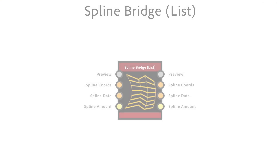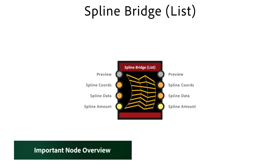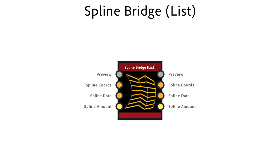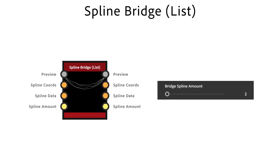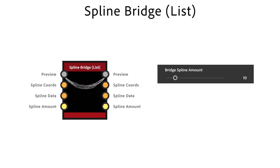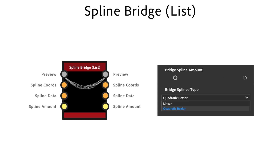For the spline bridge list node we need to place splines before. Then it generates new splines between the input splines. Bridge spline amount defines the number of generated splines. Bridge splines type lets you choose between straight linear or smooth quadratic Bezier splines.